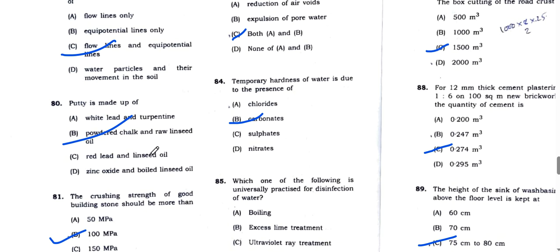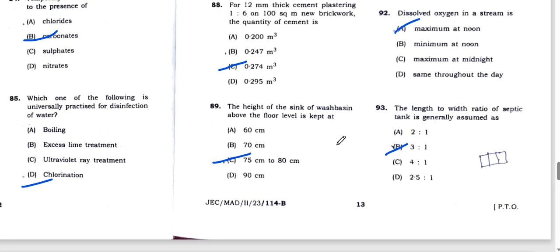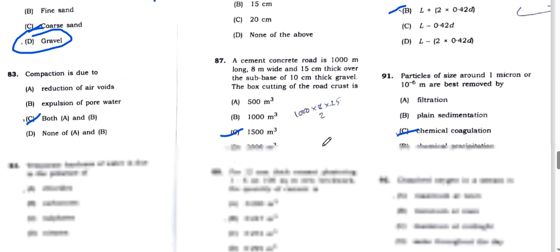Temporary hardness is due to bicarbonates, option B. Question 81, the crushing strain of good building stone should not be less than 100 MPa, option B. For disinfection of water, chlorination, option D is correct. Question 86, brick walls are measured in square meters when thickness is 10cm. For cement concrete road with length, width, thickness and sub-base layer 10cm, the box cutting will be 1500 cubic meters, option C.